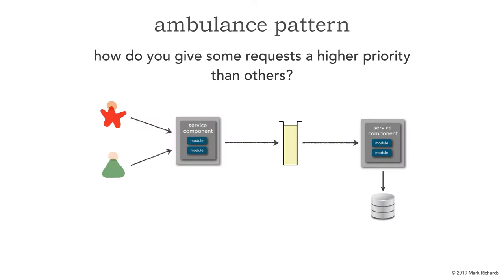Let's take a look at the scenario here. We have two types of requests coming in, the red and the green. The red being those high priority requests, coming into some sort of service component that's queued up going to another service component. We want to be able to give high priority to some messages — notice how messages are normally being processed, but now we have a high priority message that needs to go in front of everybody else, just like that ambulance.